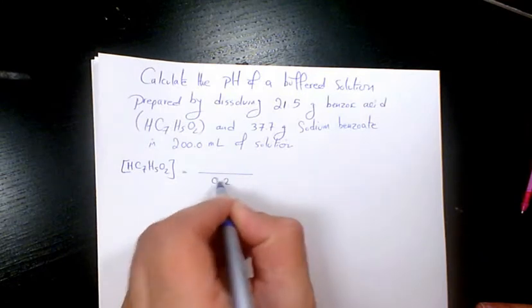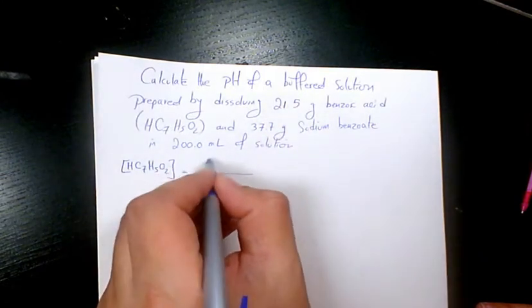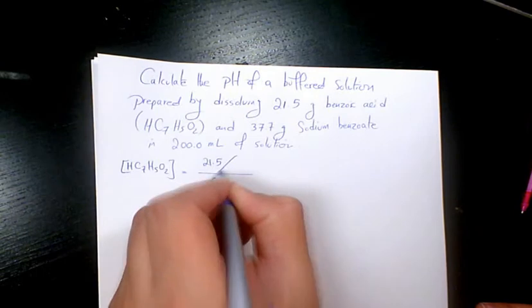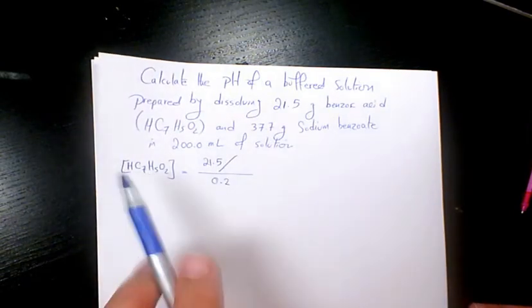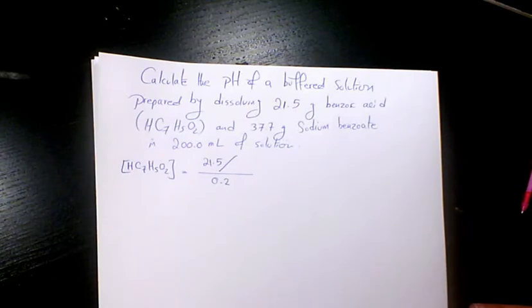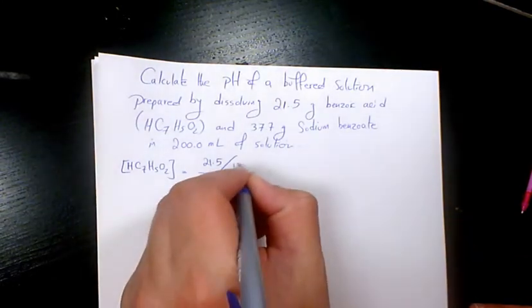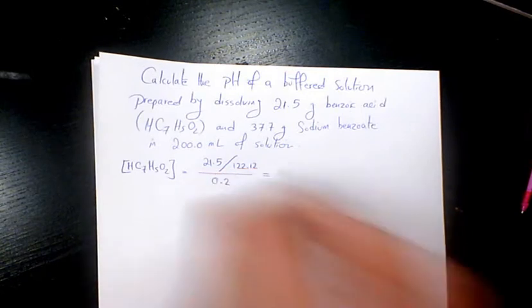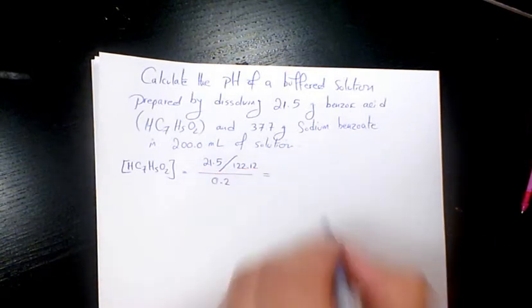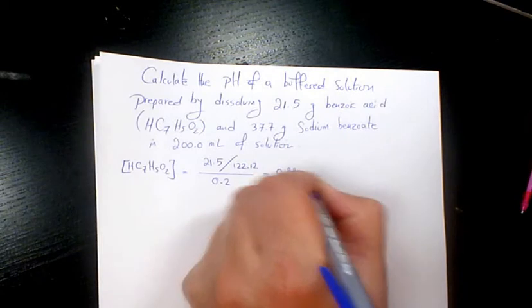Number of moles is gonna be 21.5 divided by molar mass of benzoic acid. If you find the molar mass using the periodic table it's gonna be 122.12, so that's gonna give me 0.88 mole per liter.